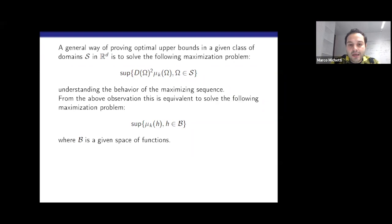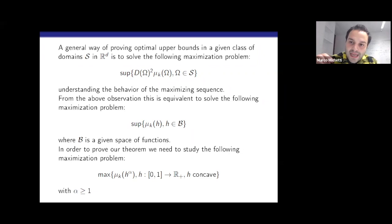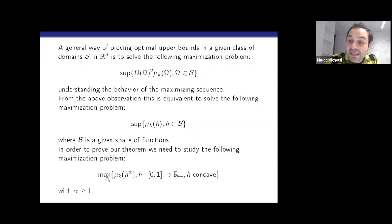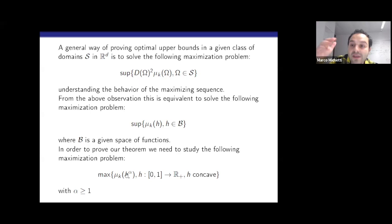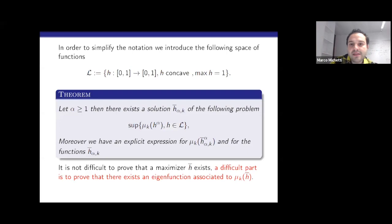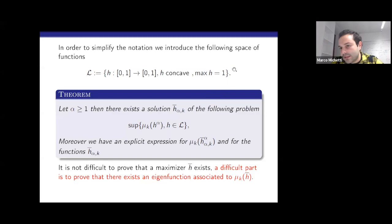In our case — studying domains for which the profile function is optimal beta-concave — this is equivalent to the following problem: take the maximum of mu_k(h^alpha) where h is a concave function. This is a way of parameterizing functions that are 1/alpha-concave, because if I take the 1/alpha power of h^alpha I get h, and h is concave. So the main theorem is: if alpha is greater than or equal to one, there exists a solution to this problem.